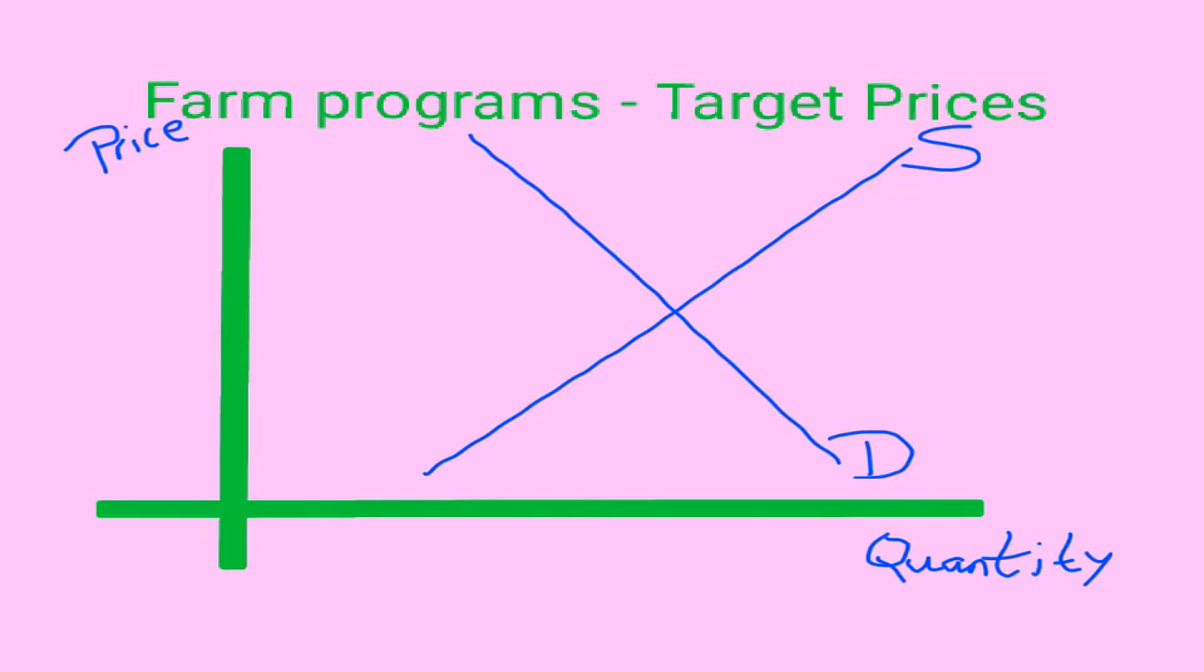Let's say that the equilibrium price is $3, the free market price. This is before the target price program is instituted.